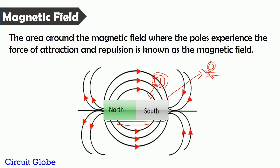In short, the magnetic field is the area around the bar magnet where, if we place any iron or other magnet, that object experiences a force of attraction or repulsion. It is nothing but the influence of the magnet present in the nearby space of the magnet.